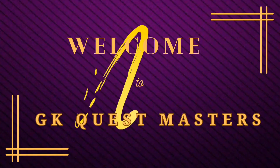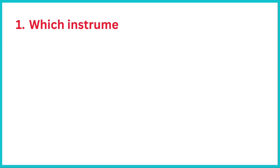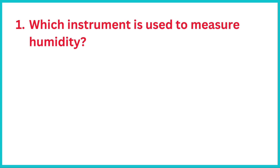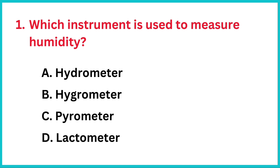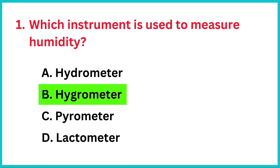Let's start today's quiz. Which instrument is used to measure humidity? The correct answer is option B: Hygrometer.